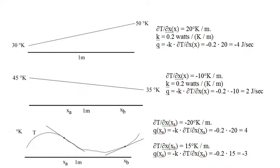With k equal to 0.2 watts per degree per meter, we can use Fourier's heat transfer law to calculate the heat flow rate in the wire as minus 4 joules per second, with heat flowing right to left. In the second graph, the temperature profile is again linear, this time decreasing, so the spatial derivative of temperature is constant and the heat flow rate is constant, this time left to right. If we choose a section of the wire delimited by xA and xB, the heat flow rate into the section at xA equals the heat flow rate out at xB, so the section is not gaining or losing heat and its temperature is constant — a steady-state condition.